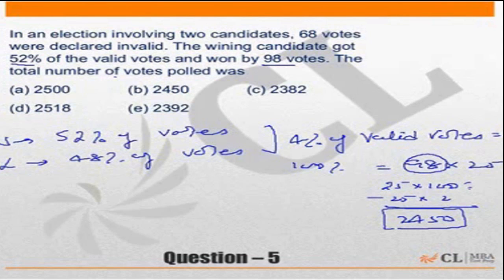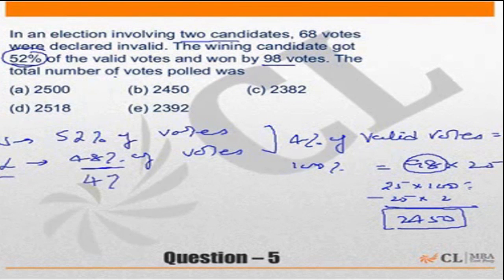Let me repeat this part. The winning candidate gets 52 percent of the valid votes. In other words, the losing candidate — because there are only two candidates — got 48 percent of the votes. So the difference between the two of them is 4 percent of the valid votes.